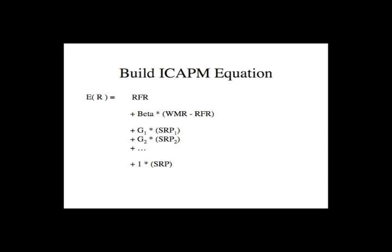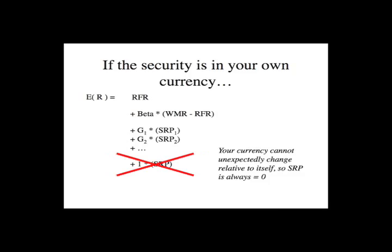Otherwise, I'll show you a different thing that comes up. It can be very confusing when people tell you to add one to a gamma. If the security is in your own currency — say we're a US investor investing in Apple — you can basically ignore the security risk premium for direct exposure because your currency cannot change unexpectedly relative to itself. A dollar is always worth a dollar. So the security risk premium is always zero if you're invested in your own currency, and I, as a US investor in Apple, don't need that last term because my returns are all in dollars.